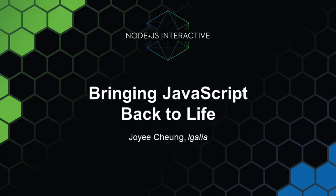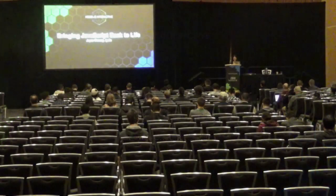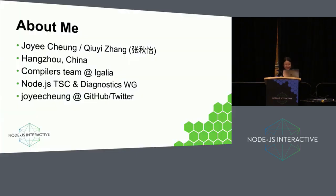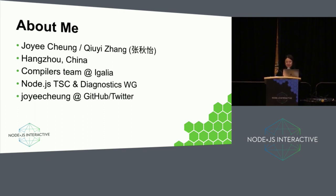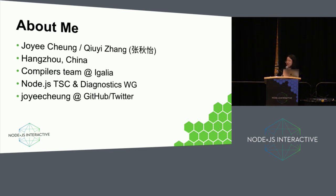I guess we'll start now. Allow me to introduce myself. I am Zhou Yi. I live in Hangzhou. I currently work on the compiler scene at Igaria. I am a member of the Node.js Techno Steering Committee and Diagnostics Working Group. You can find me on GitHub or Twitter with handle Zhou Yi Chang.